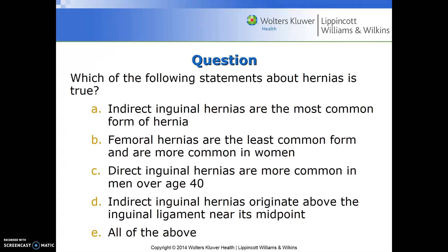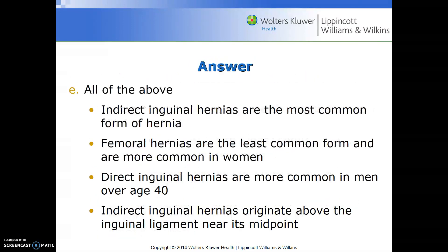We'll end this presentation with a question about true statements related to hernias, reinforcing your ability to discriminate between normal and abnormal assessment findings. Indirect inguinal hernias are the most common form. Femoral hernias are least common but more common in women. Direct inguinal hernias are more common in men over age 40. Indirect inguinal hernias originate above the inguinal ligament near its midpoint. Thank you for your attention.